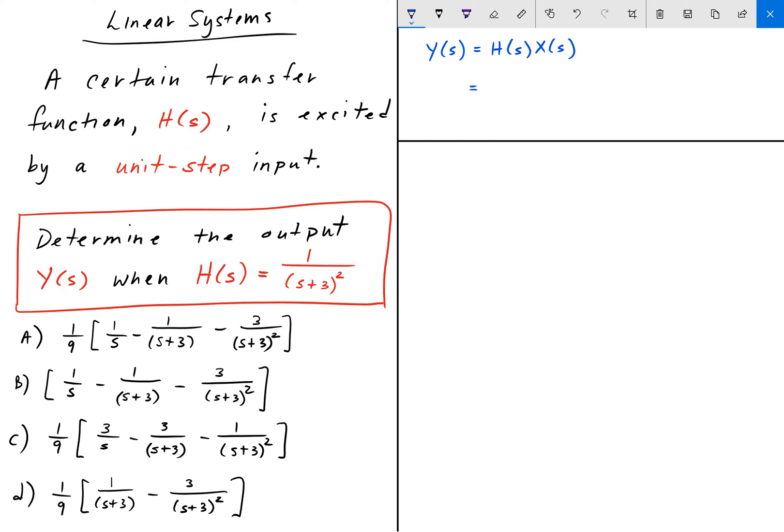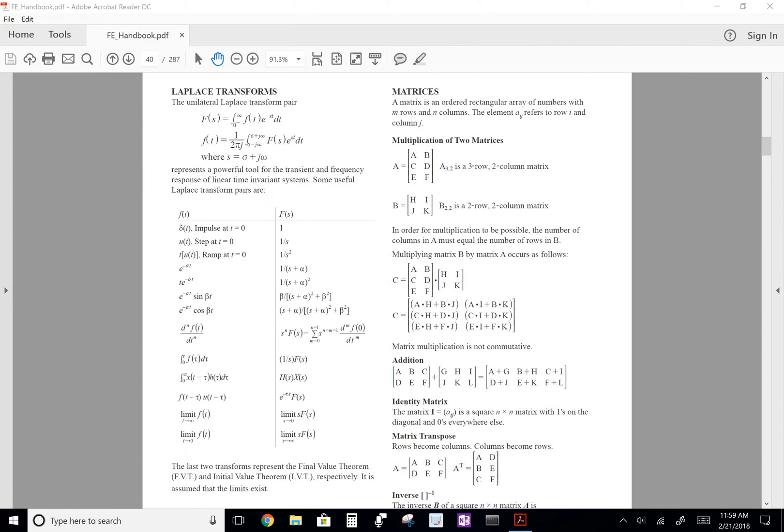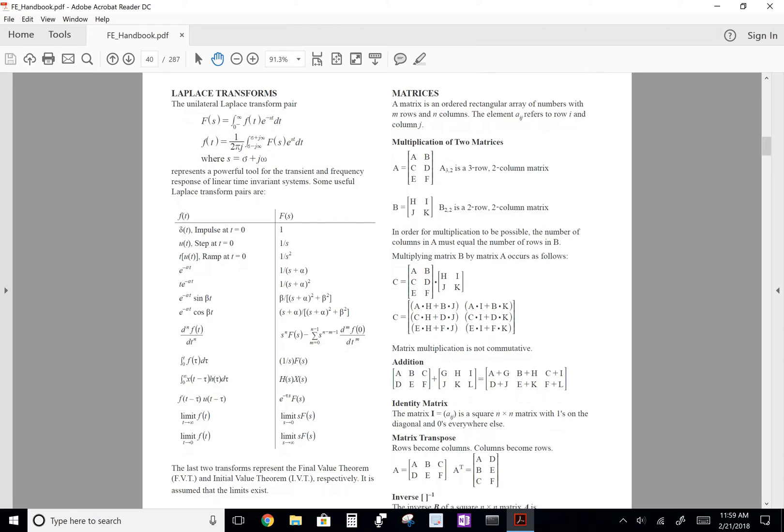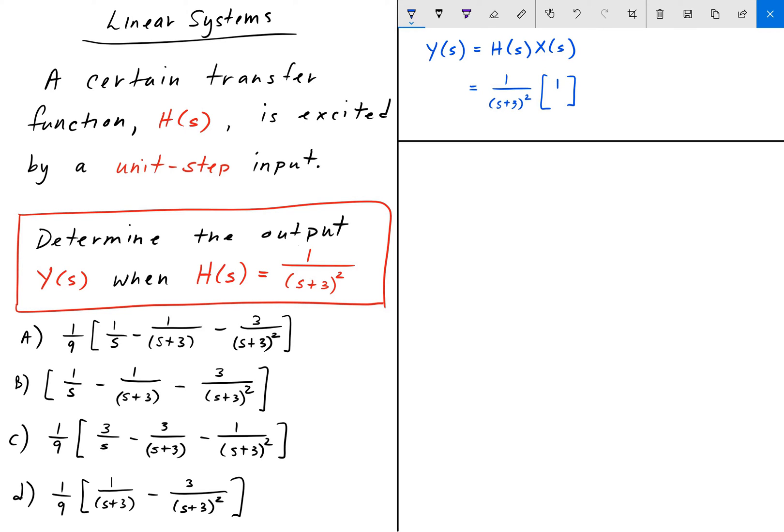And we're given that H(s) is 1 over (s+3)². So, if we go to the FE Handbook, here on page 34, we have the Laplace transform table again. And here is the unit step function, u(t), at time is equal to 0. And its Laplace transform is 1 over s. So, that's what we're going to use. 1 over s.